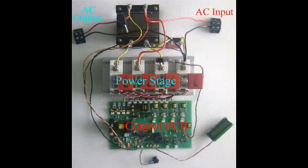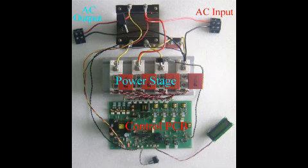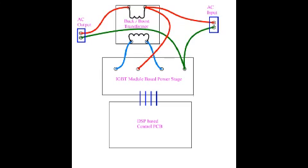This is the static voltage stabilizer using PWM. You can see the IGBT power stage, control PCB, LCD display, AC input and AC output — the neutral is common between them. There is a buck-boost transformer which adds and subtracts voltage in series with the AC input, so we can add or subtract voltage on the phase line to keep the output voltage steady.